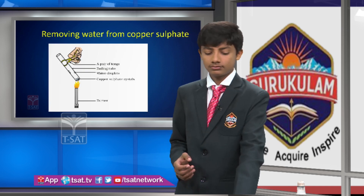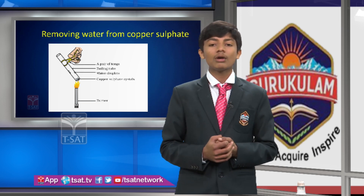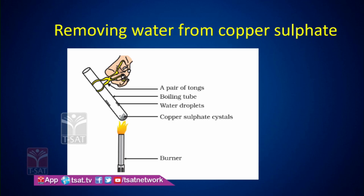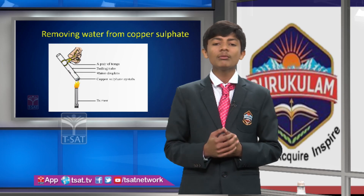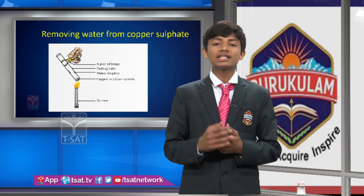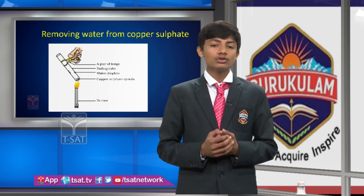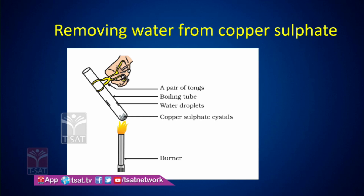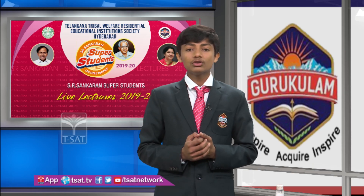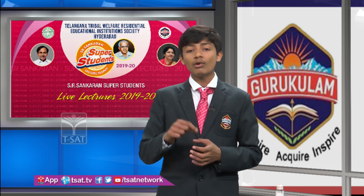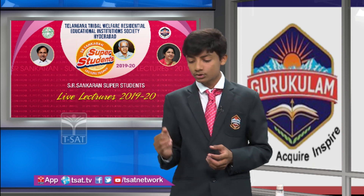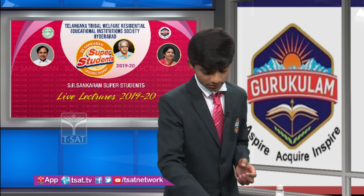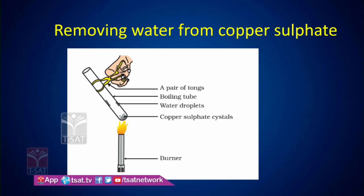Next, removing water from copper sulphate. The main aim of this activity is to prove that copper sulphate has five hydrate water molecules. We take a burner, a test tube, and a test tube holder, and add copper sulphate. When we heat it, the five hydrate water molecules evaporate and copper sulphate changes into a white color. When we add two drops of water again, it changes back to blue.